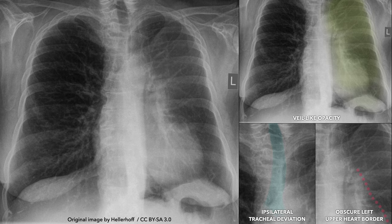An x-ray depicting left upper lobe atelectasis may reveal a hazy, veil-like opacity over the left lung, effacement of the left upper heart border, and signs of decreased lung volume, such as ipsilateral tracheal deviation and elevation of the left hilum.